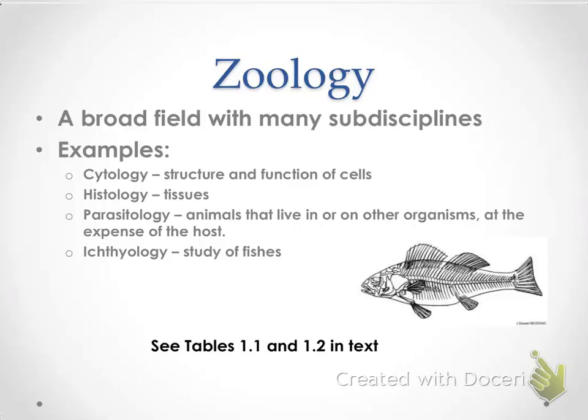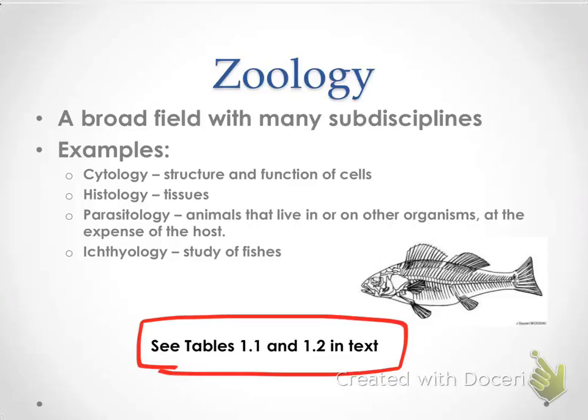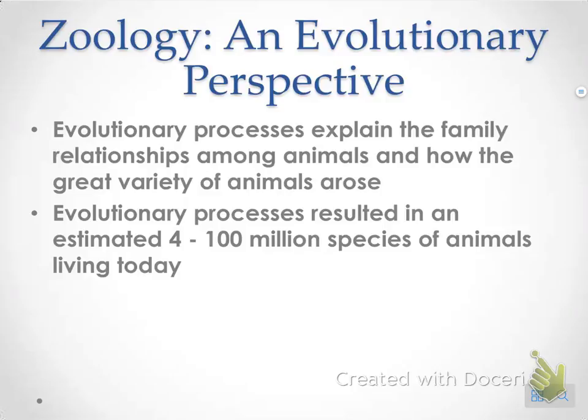Photosynthesis is making your own food. Zoology is a broad field, but there are many sub-disciplines. There are some examples: cytology is the structure and function of cells, histology is tissues, parasitology is animals that live in other organisms, and ichthyology is the study of fishes. If you look in Tables 1.1 and 1.2 in your text, you'll see many other different types of studies.